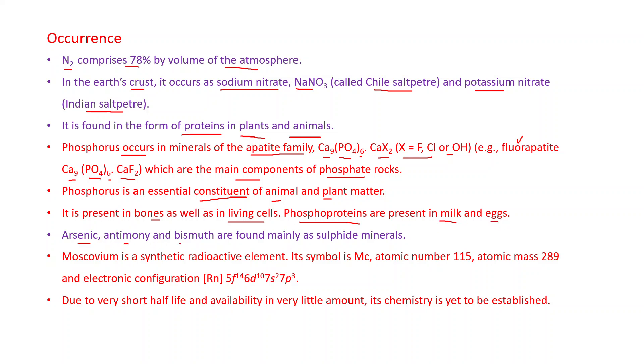Arsenic, antimony, and bismuth are found mainly as sulfide minerals. Moscovium is a synthetic radioactive element. It is prepared in the laboratory and emits invisible radiation: alpha, beta, and gamma. Its symbol is Mc, atomic number 115, atomic mass 289, and electronic configuration is [Rn]5f14 6d10 7s2 7p3. Due to very short half-life and availability in very little amount, its chemistry is yet to be established.